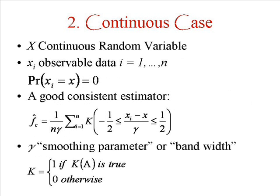In the continuous case, we have always continuous random variable, capital X, and a given set of observable data xi. The probability that xi, our observed data, are equal to x is equal to zero.